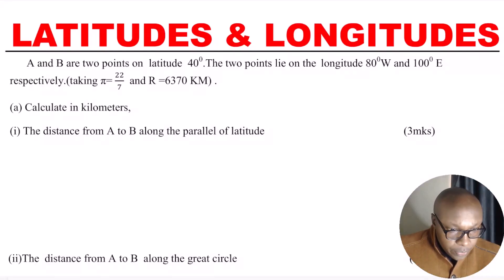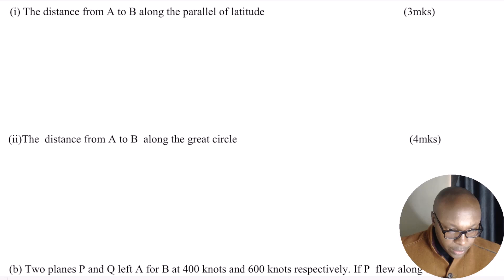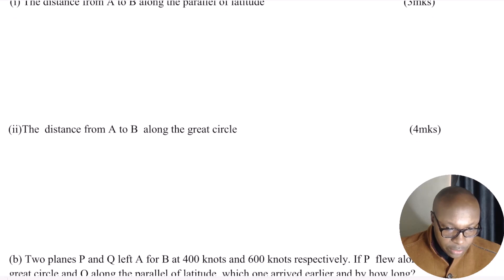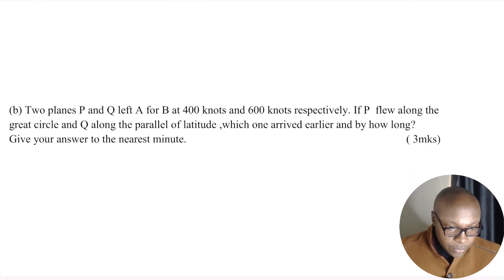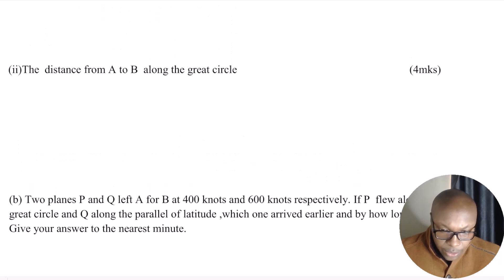Latitudes and longitudes. A and B are two points on latitude 40 degrees. The two points lie on longitude 80 degrees west and 100 degrees east respectively. Taking pi to be 22 over 7 and radius to be 6370 kilometers. Part A: calculate in kilometers — (1) the distance from A to B along the parallel of latitude, and (2) the distance from A to B along the great circle. Then Part B: two planes P and Q left A for B at 400 knots and 600 knots respectively. Give your answer to the nearest minute.